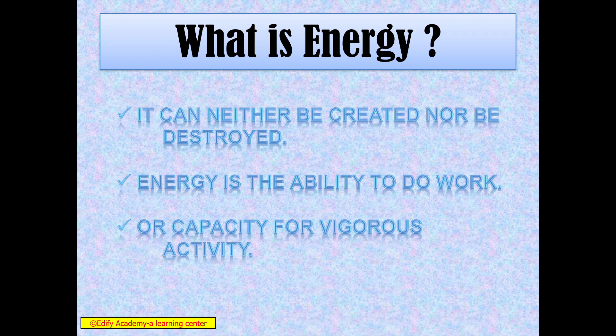The first term is: what is energy? We all know that we have studied these things from schooling to the end of our life. Every time we find out what is energy and how it is created, can it be created or not. It can neither be created nor be destroyed because we cannot create energy. We can only convert energy. That's why energy is the ability to do work. Whatever work we are doing, energy is required for completing that work, or it is the capacity for vigorous activity.